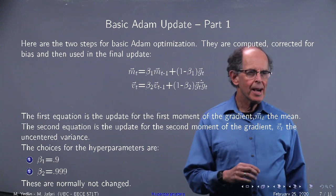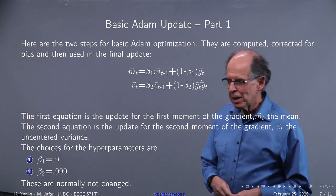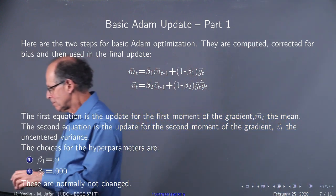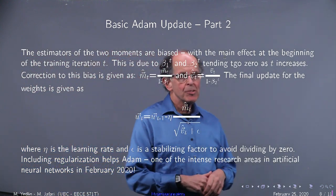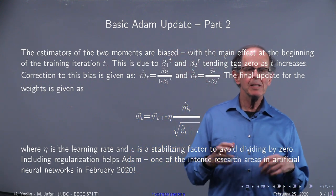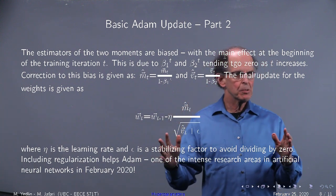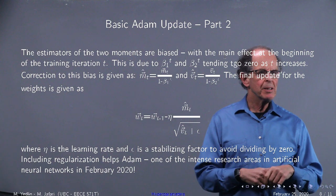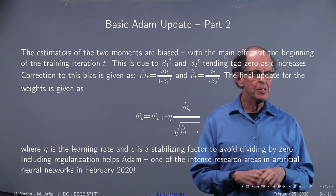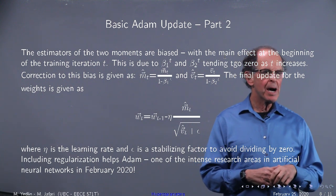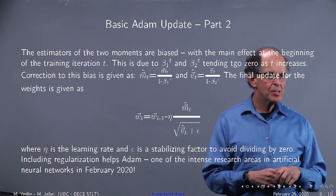Once we have this there's a few fiddles we have to do. It's not just like in ordinary momentum. The estimators are biased with the main biasing effect beginning at the start of training. This is the fact that beta 1 and beta 2 tend to zero as t increases. We correct the biases to get m hat and v hat and there's the update.